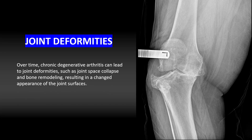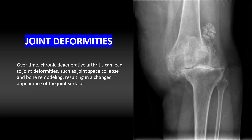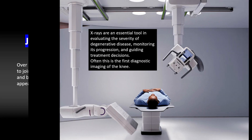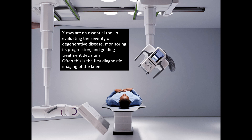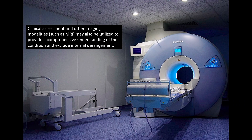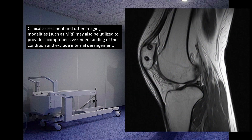Over time, chronic degenerative arthritis can lead to joint deformities such as joint space collapse and bone remodeling, resulting in a changed appearance of the joint surfaces. X-rays are an essential tool in evaluating severity, monitoring progression, and guiding treatment decisions — often being the first diagnostic imaging used. However, clinical assessment and other imaging modalities such as MRI may also be utilized to provide a comprehensive understanding and exclude internal derangement.